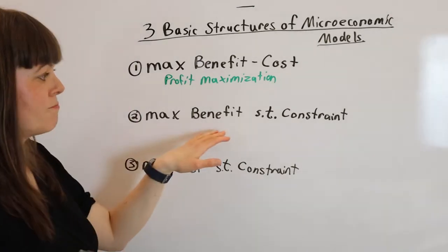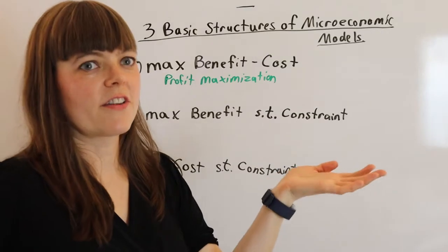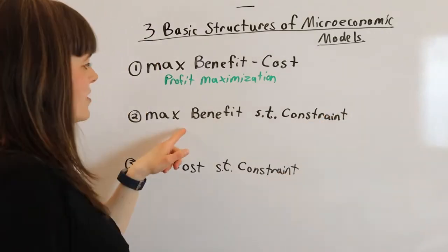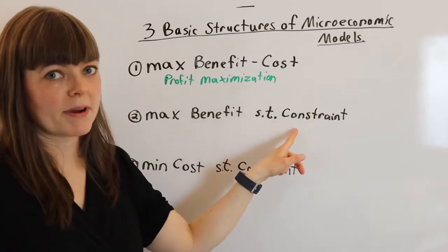Then we're going to have maximized benefit subject to a constraint, and this is actually where the textbook starts off. This is going to be maximized utility, for example, subject to a budget constraint.